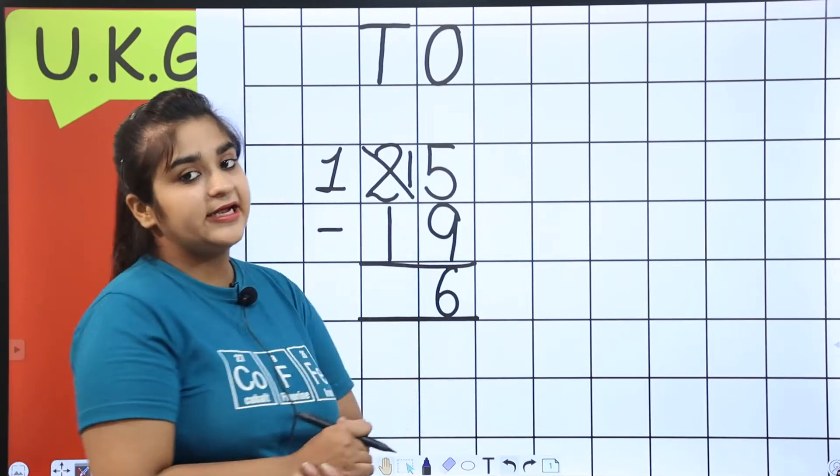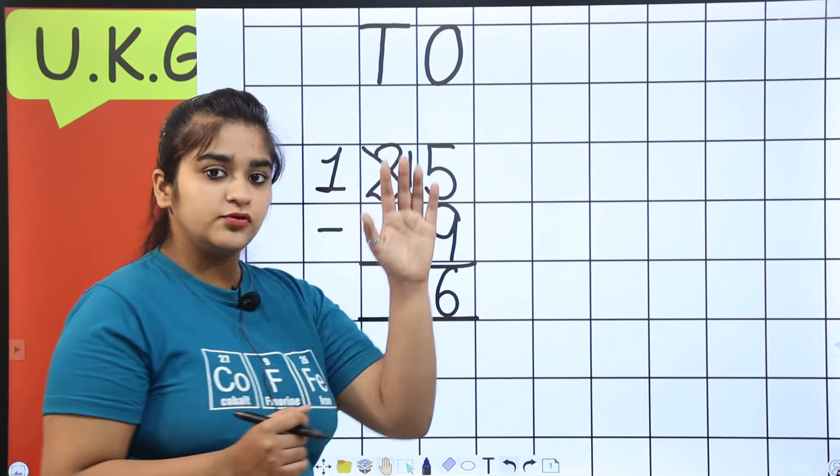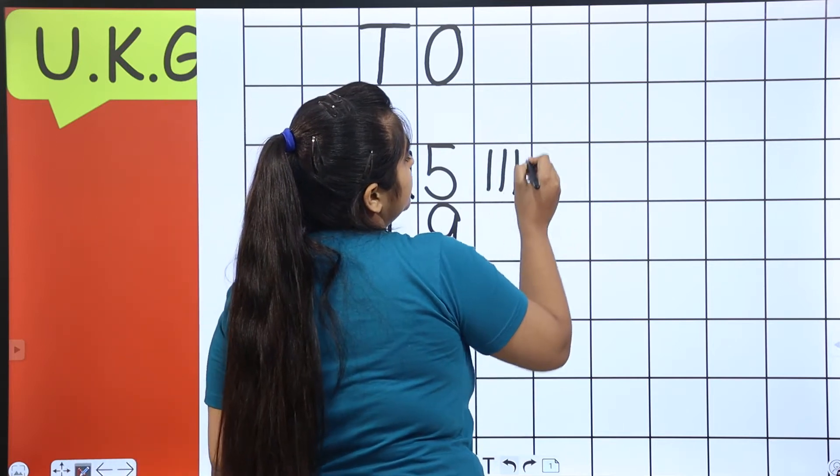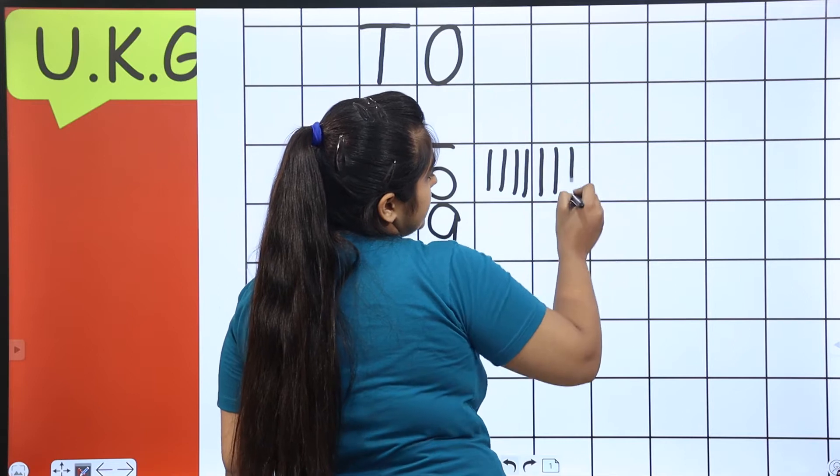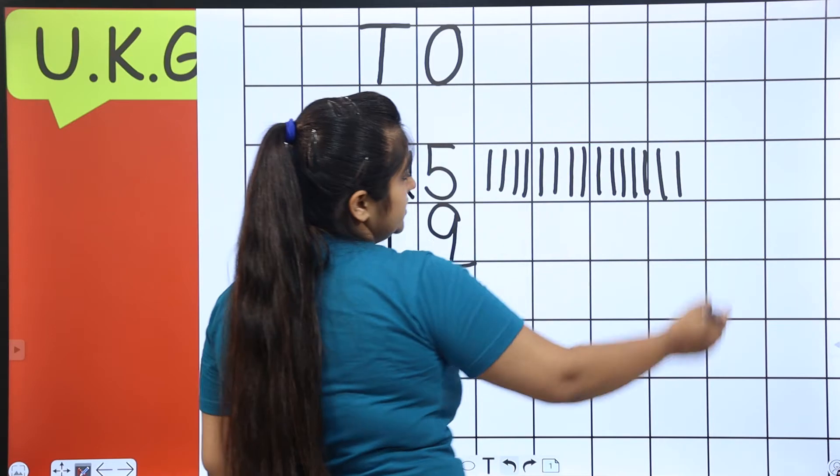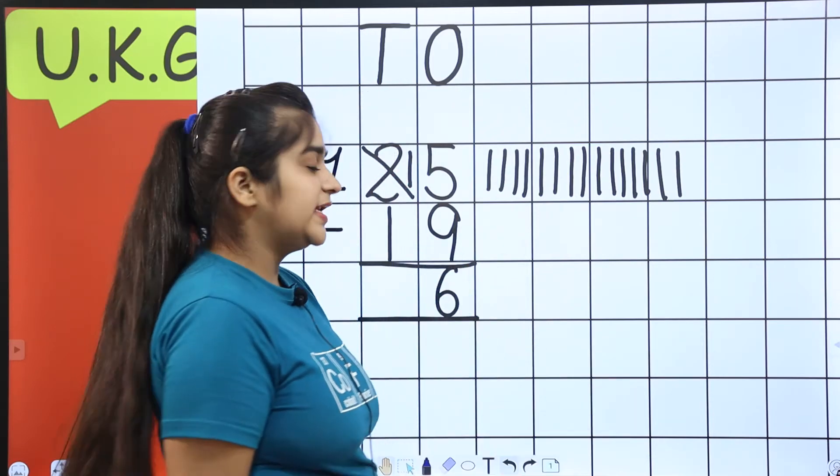And the second method is the line. So, there is 15. So, let's draw 15 lines. 1, 2, 3, 4, 5, 6, 7, 8, 9, 10, 11, 12, 13, 14, 15. Okay.